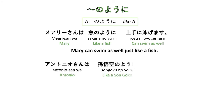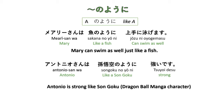Antonyo-san wa Songoku no yoni tsuyoi desu — Antonyo is strong like Songoku. Songoku is a character in the Dragon Ball manga or anime. Antonyo-san wa Songoku no yoni tsuyoi desu.